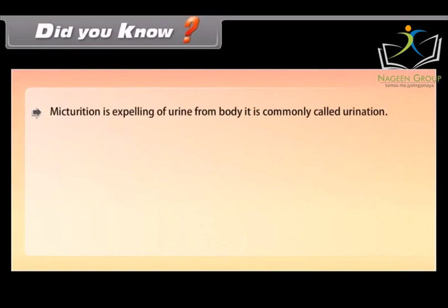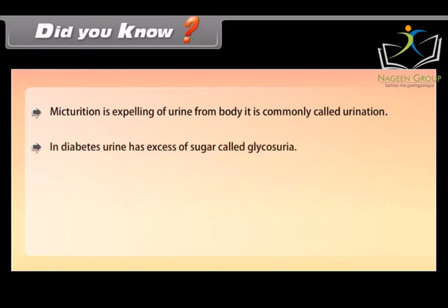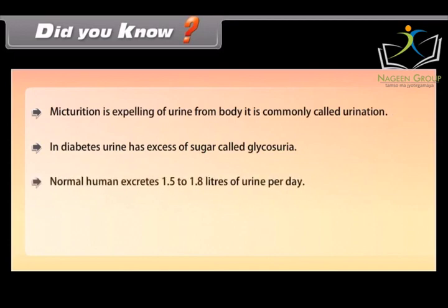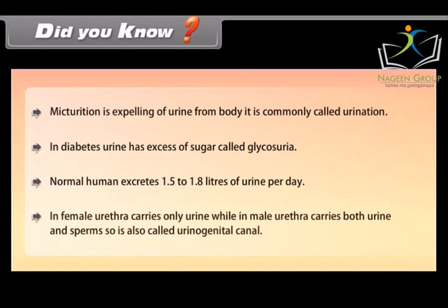Did you know: Micturition is the expelling of urine from the body, commonly called urination. In diabetes, urine has excess sugar, called glycosuria. A normal human excretes 1.5 to 1.8 liters of urine per day. In females, the urethra carries only urine, while in males, the urethra carries both urine and sperms, so it is also called the urinogenital canal.